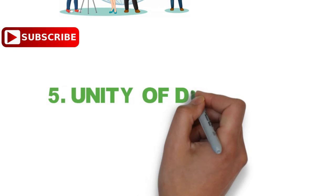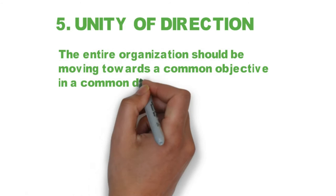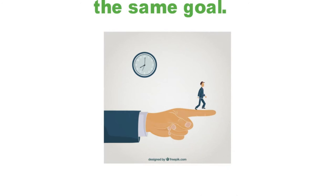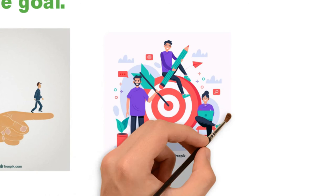Number five: Unity of Direction. The entire organization should be moving toward a common objective in a common direction. This principle states that there should be only one leader and a plan for a series of activities seeking to achieve the same goal. For example, a sales manager and his staff should only concentrate on achieving sales targets.